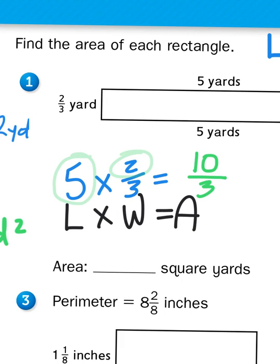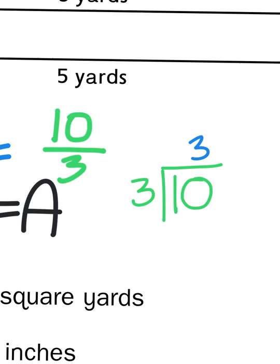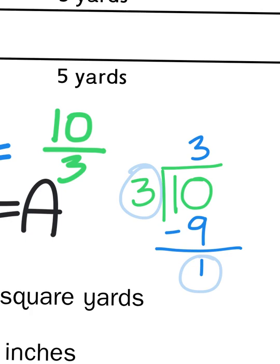10 thirds of a yard is hard to visualize, so I want to convert that to a mixed number — how many whole groups of yards can I get out of that amount? I divide the numerator, 10, by the denominator: how many groups of 3 can I get out of 10? 3 times 3 gives me 9, and 3 times 4 gives me 12, which is too much. So 3 times 3 equals 9, subtract to get a remainder of 1. That 1 third left over becomes the fraction part, so 10 thirds is the same as 3 and 1 third.